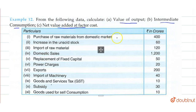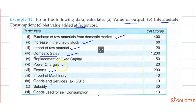What do we have? Purchase of raw materials from the domestic market. Increase in unsold stock. Import of raw materials. Domestic sales. The export is not included here, we have to include it. Replacement of fixed capital — we also call this depreciation. Power charges are given.